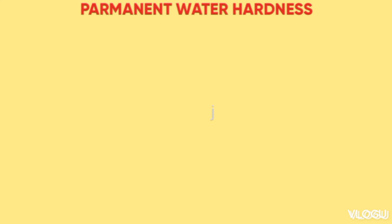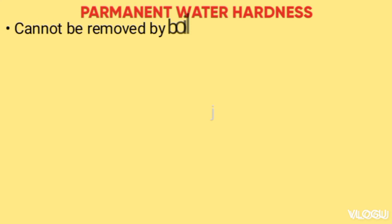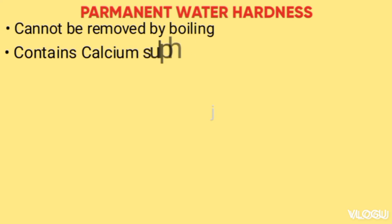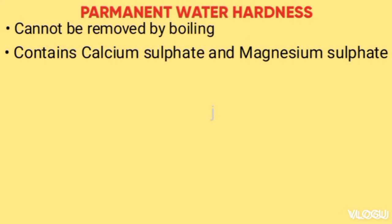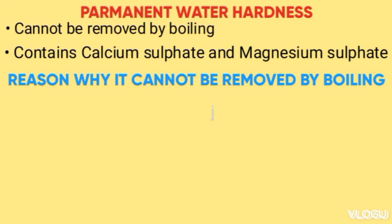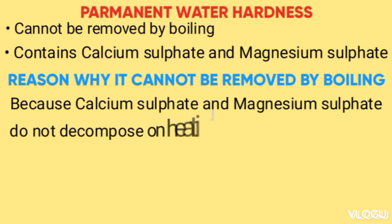Permanent water hardness cannot be removed by boiling and contains calcium sulfate and magnesium sulfate. The reason why it cannot be removed by boiling is because calcium sulfate and magnesium sulfate do not decompose on heating.